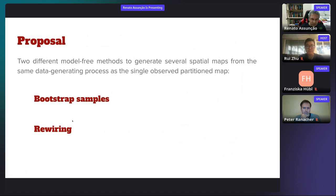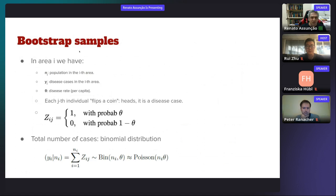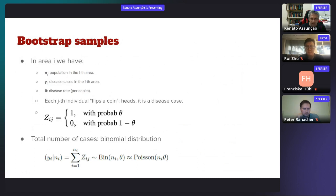For bootstrap samples, recall the notation: in area i, N_i is the population size, Y_i is the number of disease cases, and theta is the per-capita disease rate, which can vary by area. Each individual flips a coin — if heads, they are considered a disease case. Z_ij is the outcome for the j-th individual in area i: one for a disease case, zero otherwise. Theta is the probability of being a case. The total number of cases follows a binomial distribution, approximated under certain assumptions by the Poisson distribution.